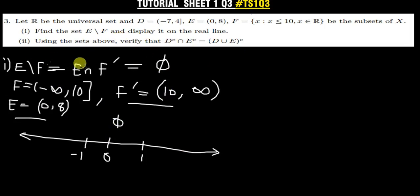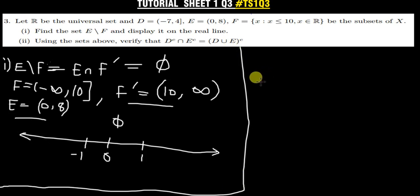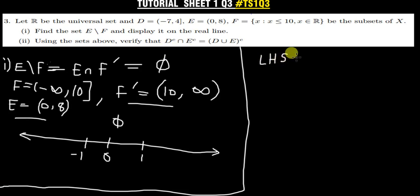Now let us answer part two. To find the solution we first need to know what D complement and E complement are, because we are asked to verify that D complement intersection E complement equals (D union E) complement. To verify this we deal with the left-hand side first.